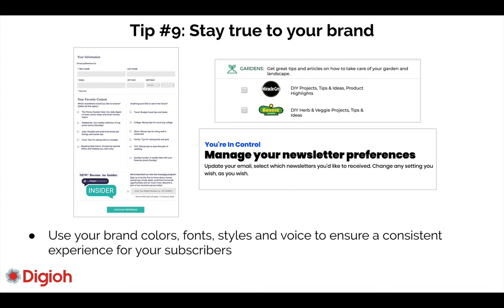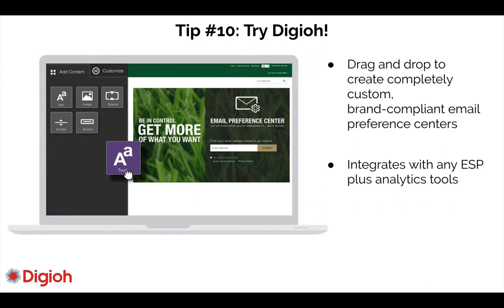Tip number ten: use Digio. We are a drag-and-drop solution and a very powerful tool. We not only build the whole thing out for you, we help you strategize, think it through, and build the entire end-to-end integration. We can also integrate with Google Analytics so you can measure performance. It's all brand compliant, CCPA and GDPR compliant. Check us out — set up a demo at digio.com. Email preference centers are one of the most exciting things we're working on right now. Thank you!